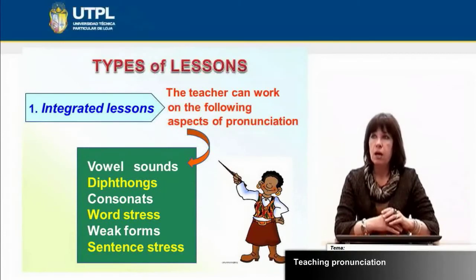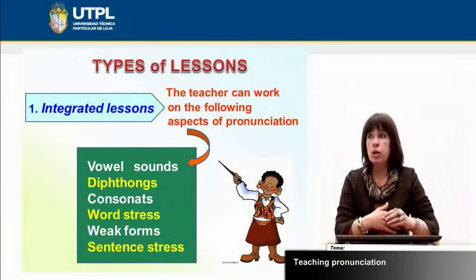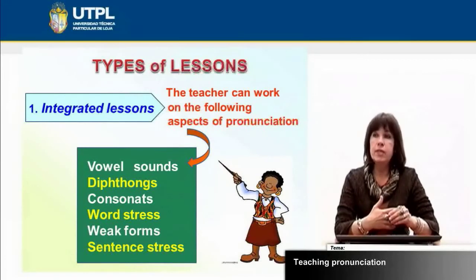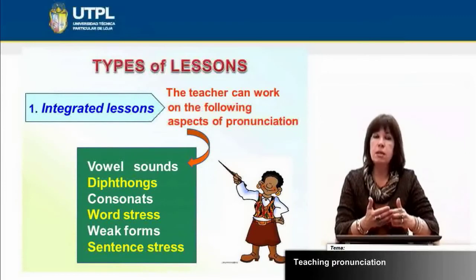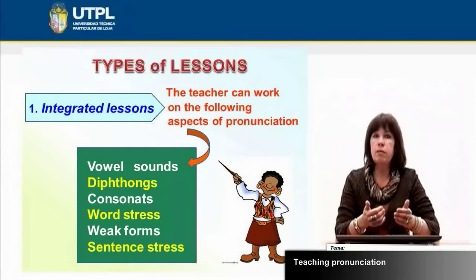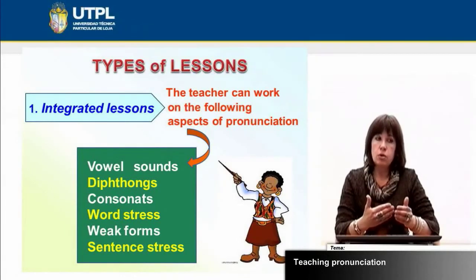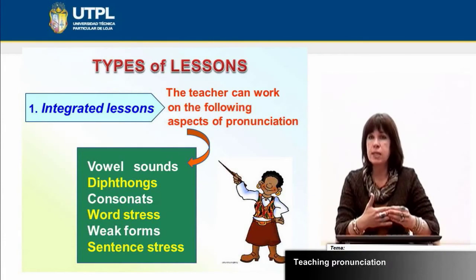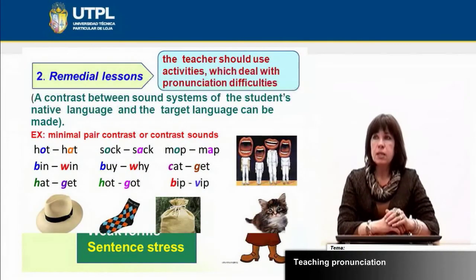Planned teaching of pronunciation consists of three main kinds of lessons. The first is the integrated lesson, where teachers work on aspects like vowel sounds — explaining how they are produced, the difference between, for example, the Spanish and English vowel systems, and teaching diphthongs. It also includes consonants, highlighting the main differences in how they are produced compared to the students' native language, as well as elements of word stress and sentence stress.